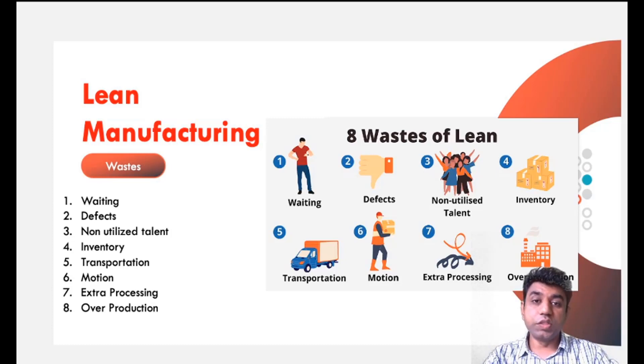The fifth is transportation. There should not be uneven transportation. For that, proper supply chain management principle must be involved and operational research concept must be properly understood to eliminate this unnecessary transportation. The sixth one, that is the motion. There should not be any unnecessary motion. Seventh is extra processing. Process the good as per the requirement of customer only.